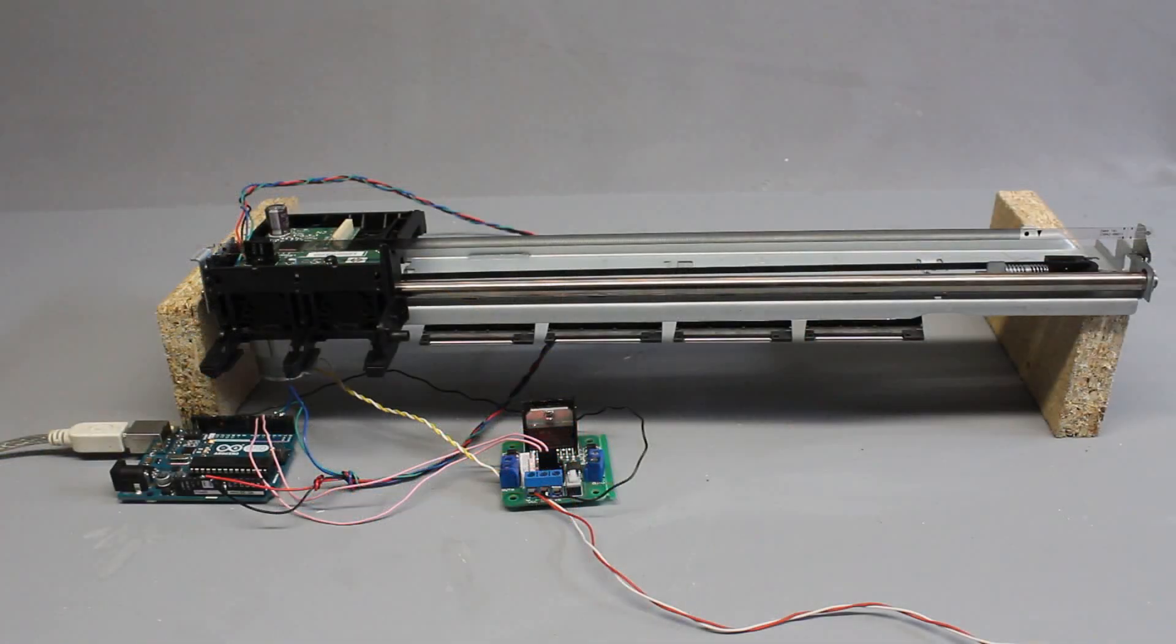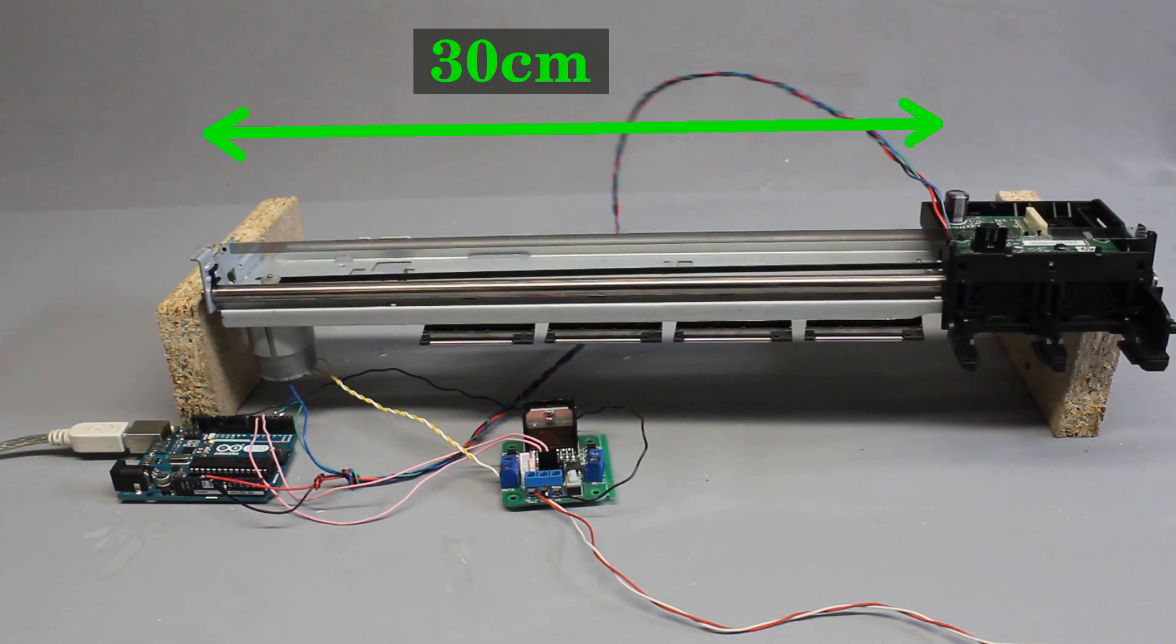This type of linear drive is fast. Less than 2 seconds are needed to move the printhead from left to right, which equals a distance of approximately 30cm.